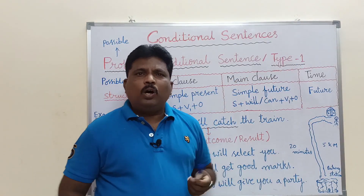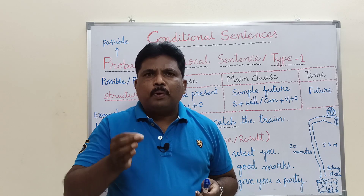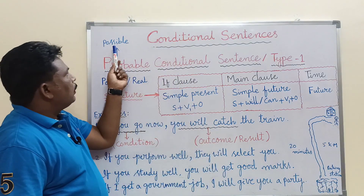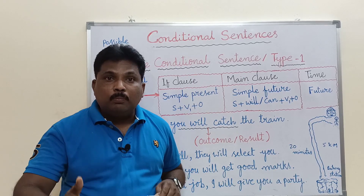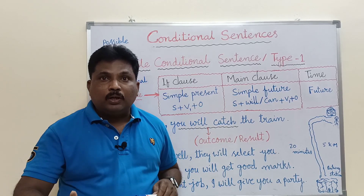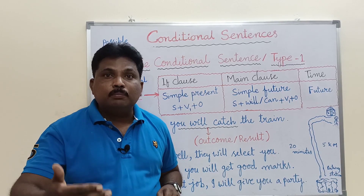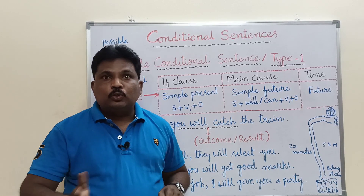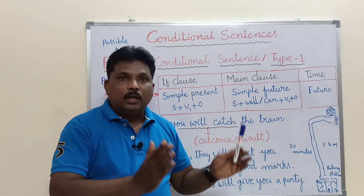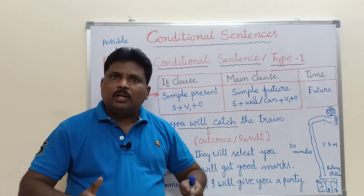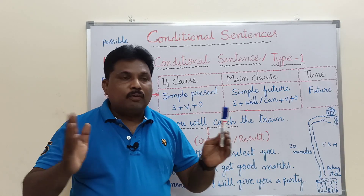What is the meaning of 'probable'? In the probable condition, the word 'probable' means possible. So in a probable conditional sentence, the action is possible for any doer. There is no distinction between one performer and another — whoever the performer may be, the action is possible for him or her.